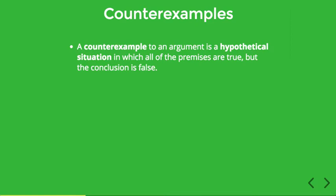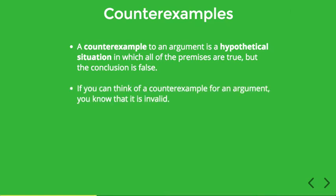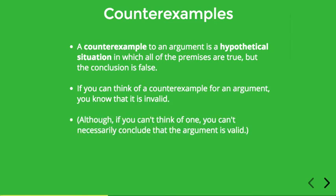It's kind of like a little story or a picture that portrays all the premises as true but the conclusion false. If you can even think of one counter example to an argument, then you know that it's invalid, since you've shown that it's possible or conceivable for the premises to be true while the conclusion is false. It's important to note that coming up with a counter example is a kind of proof that an argument is invalid. But if you can't come up with a counter example, that doesn't necessarily mean the argument is valid.